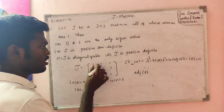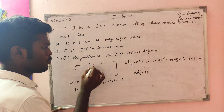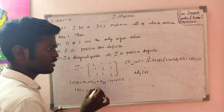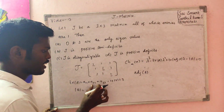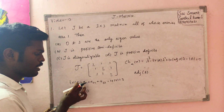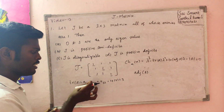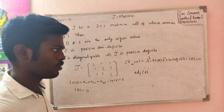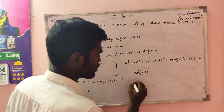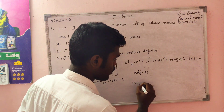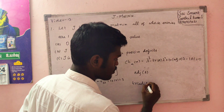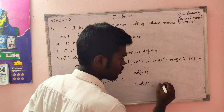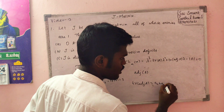The trace of adjoint of A involves the cofactors: A11, A22, A33, and so on. If you change the trace of adjoint of A, then the adjoint entries are computed as A1, A2, A3 combinations.